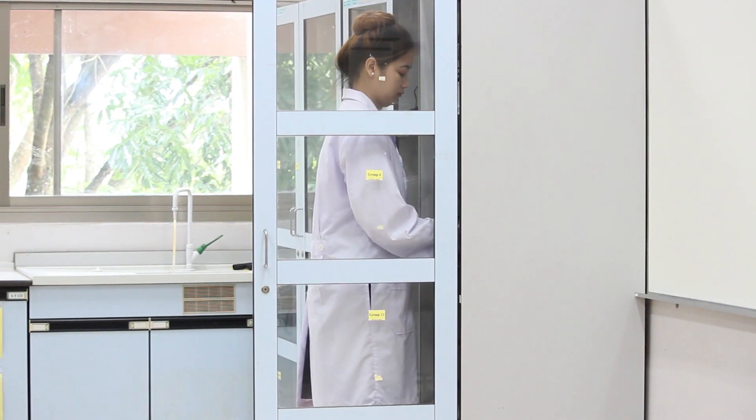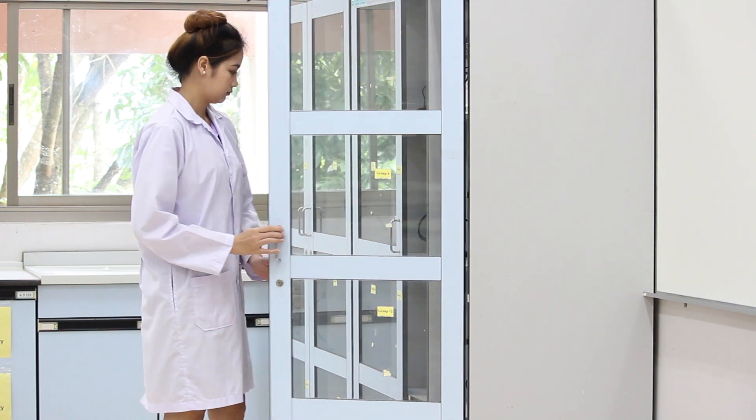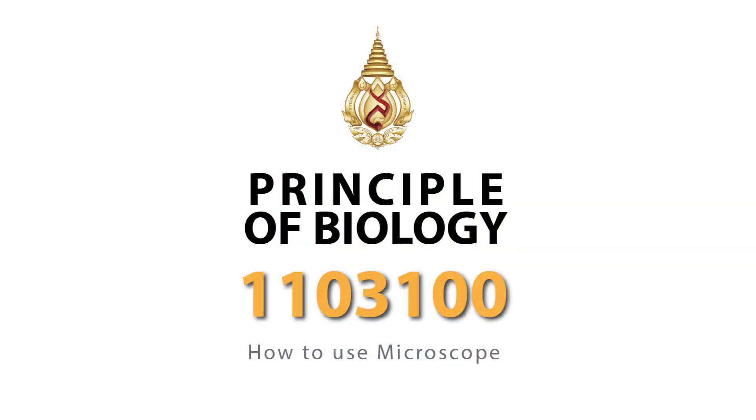We hope that you have learned everything that you need to know about using both compound light microscopes and stereo microscopes, and you know the parts of each microscope and so forth. And be ready to go for your lab that is coming up here in principle of biology course. Goodbye.